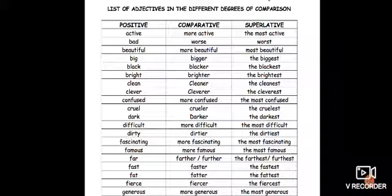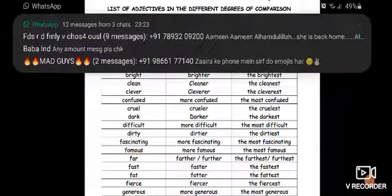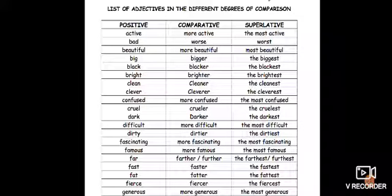Similarly, consider the word 'bad.' In the positive degree: Gita is a bad girl. When changed to the comparative degree, we compare two persons — Amita is worse than Gita — comparing the two girls' attitude or behavior. Coming to the superlative degree, 'bad' changes to 'worst': Rekha is the worst girl in the class, meaning no other girl is as bad as Rekha. This is how words change their form when used in different degrees.